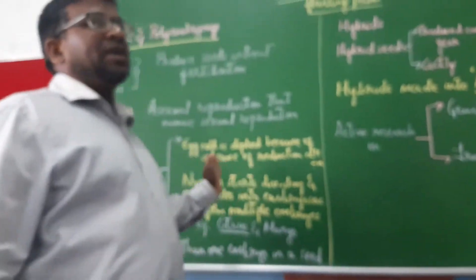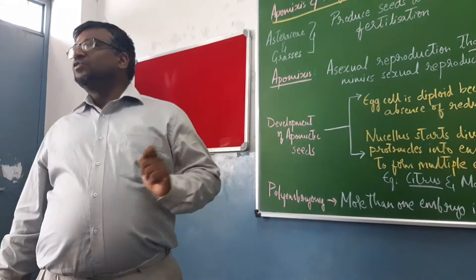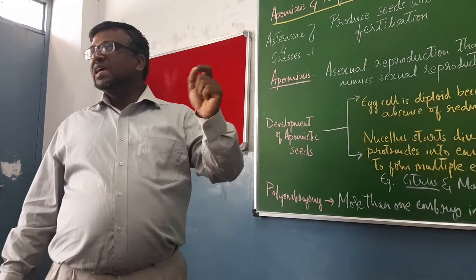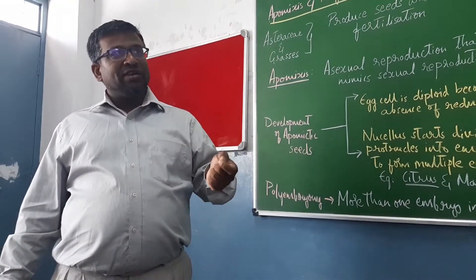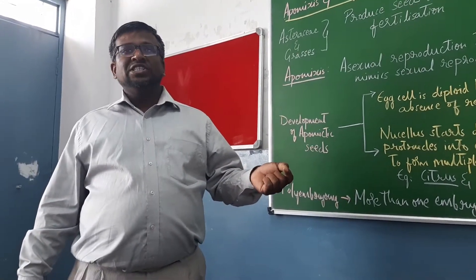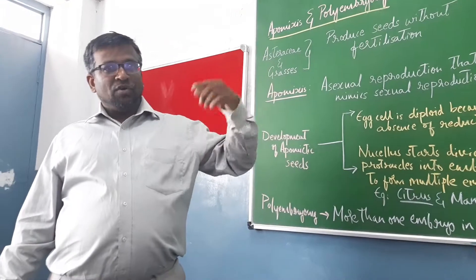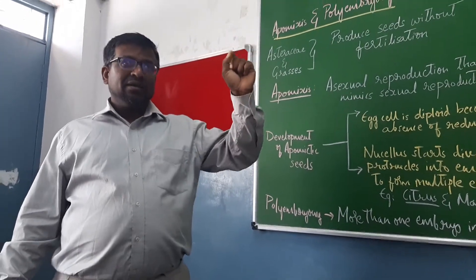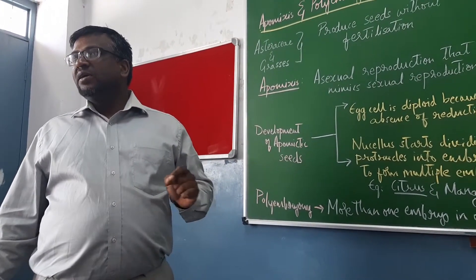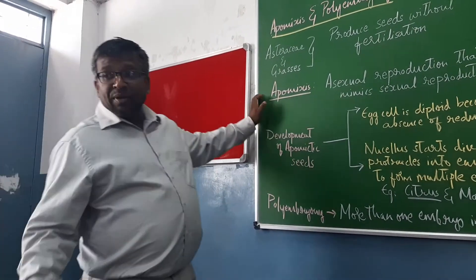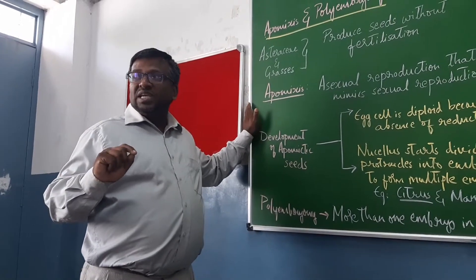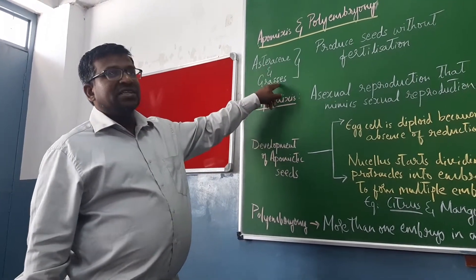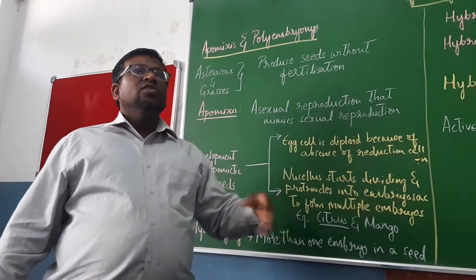This lesson is about apomixis and polyembryony. Generally, seeds are formed after fertilization. The embryo is formed when a sperm cell fuses with the egg cell to form the zygote, and the zygote develops into the embryo. But in some members of the family Asteraceae (sunflower family) and grasses, seeds are formed without fertilization.